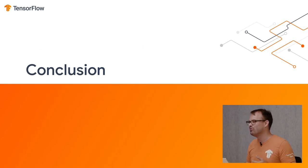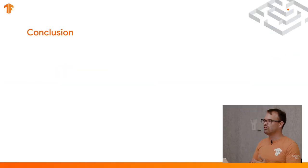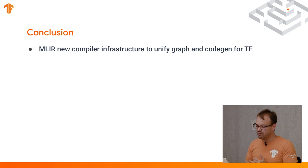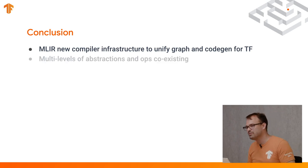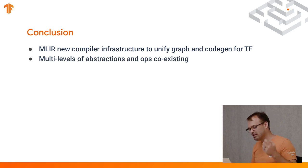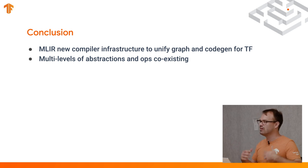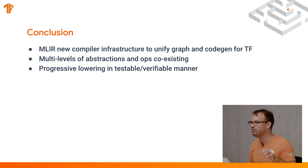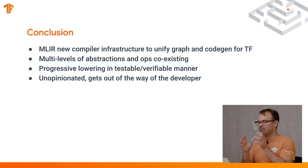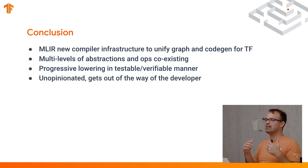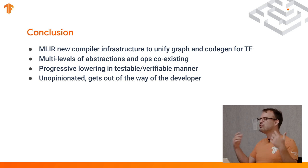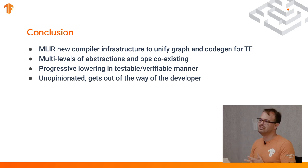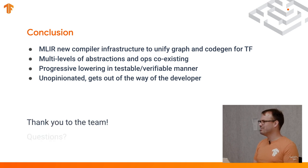That is sort of just a whirlwind tour of the application we're looking at. In conclusion, MLIR is a new compiler infrastructure to unify graph and code generation for TensorFlow. We're looking at representing multiple levels of abstractions and ops from different dialects coexisting and being optimized together. We want to enable progressive lowering in a testable and verifiable manner, making it easier to add tests verifying behavior. Beyond that, we want to make this infrastructure as unopinionated as possible — get out of the way of the developer and enable them to define their own abstractions for targeting their use cases and backends. Thanks everybody — open for questions.